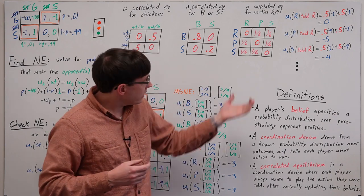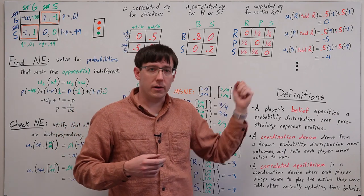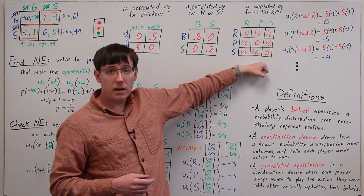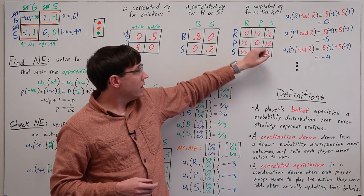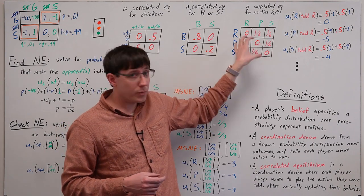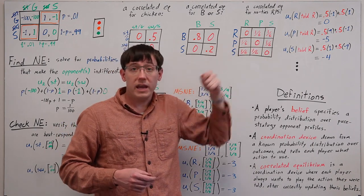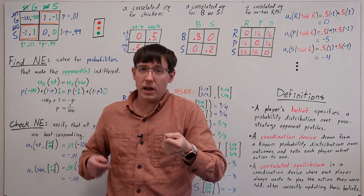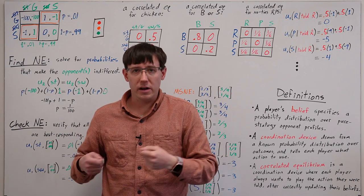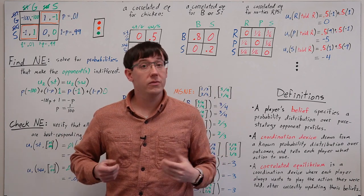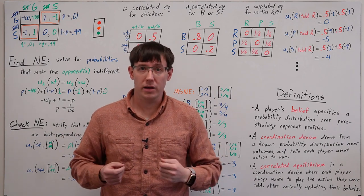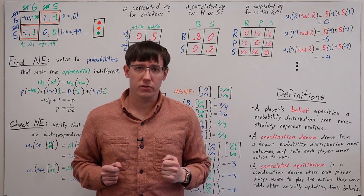All of those calculations would look fairly similar, and so this distribution over outcomes is in fact a correlated equilibrium of our no-ties rock-paper-scissors.